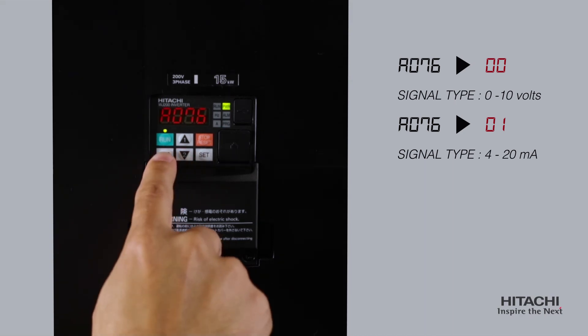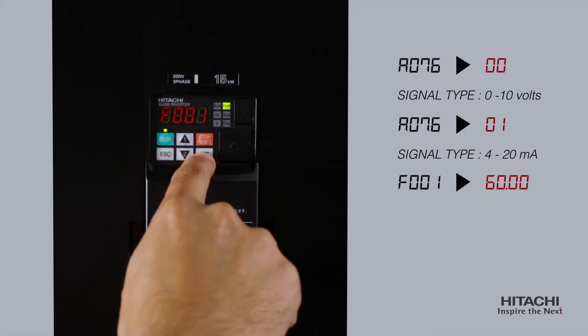To maintain a constant pressure, say 60 psi, set F001 to 60.